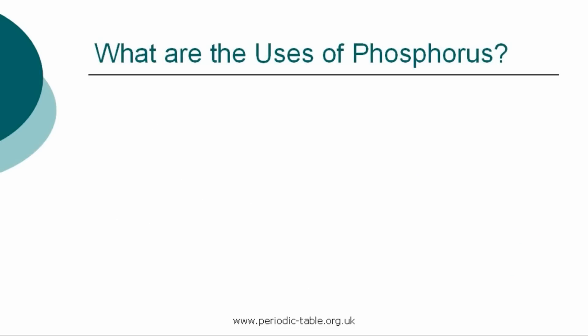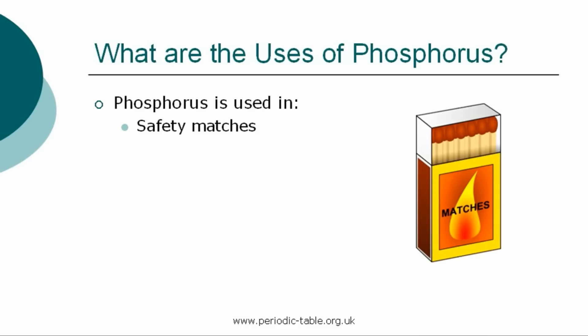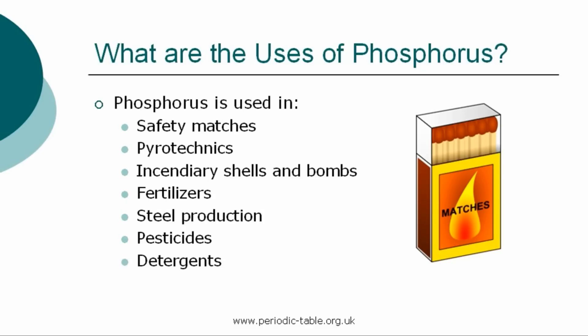Once the properties of an element have been established, we can identify how it can be used. A well-known use of red phosphorus is the safety match. The red phosphorus safety matches were invented by Gustav Erik Pasch in 1855. The safety aspect was that the match did not contain all the elements for combustion, achieved by a chemical reaction between the match head and the striking surface. Other uses of phosphorus include pyrotechnics, incendiary shells and bombs, fertilizers, steel production, pesticides, and detergents.